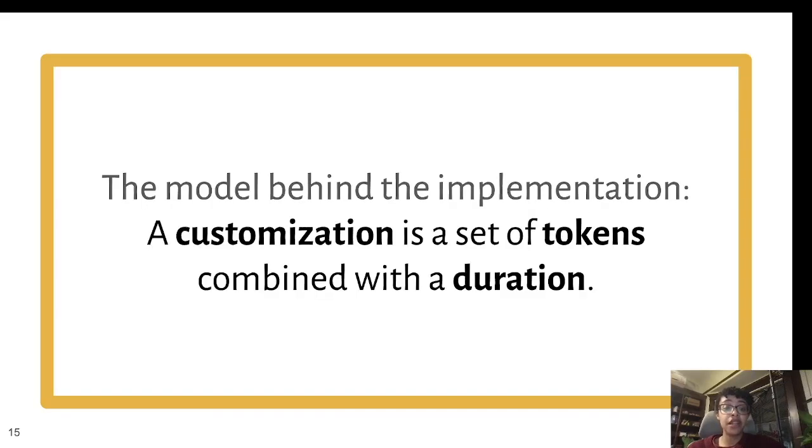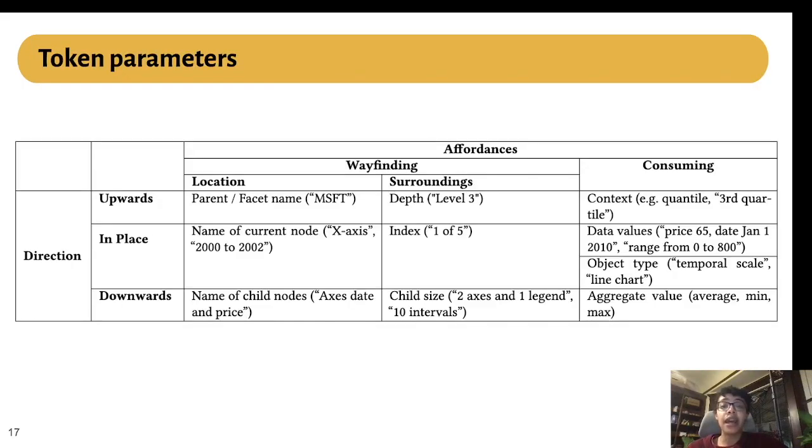Based on the design goals we identified, it was clear that we would need a way to break down a description into pieces so that it could be customized piece by piece. We called these pieces tokens. With this approach, users can adjust presence by toggling individual tokens on and off. They can adjust ordering by changing the position of individual tokens in a list. They can set verbosity as a property of any one token. They can assign each customization overall a duration or how long it lasts.